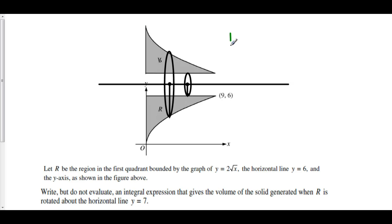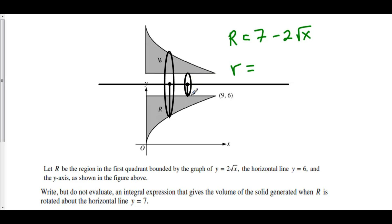Big R, my larger radius, goes from 7 down to 2 root x. The distance from 7 to 2 root x is my larger function: 7 minus my smaller function, which is 2 root x. Furthermore, little r is equal to the distance from 7 down to 6. So little r is 7 minus 6, which equals 1.